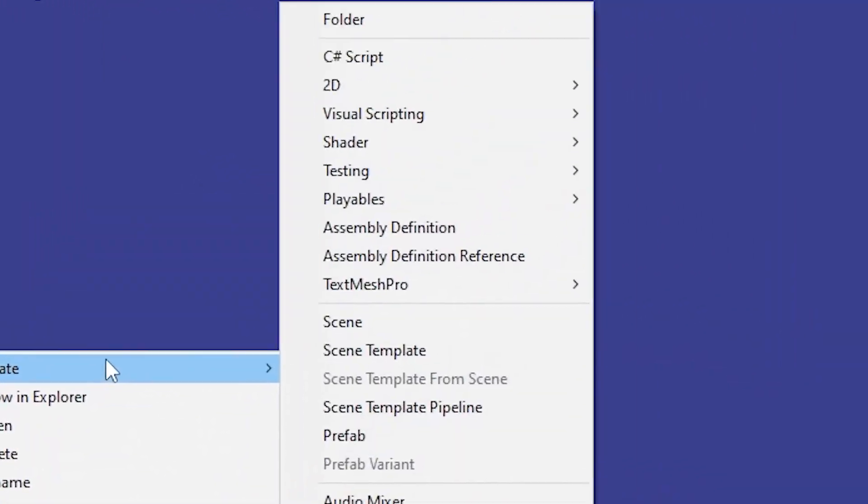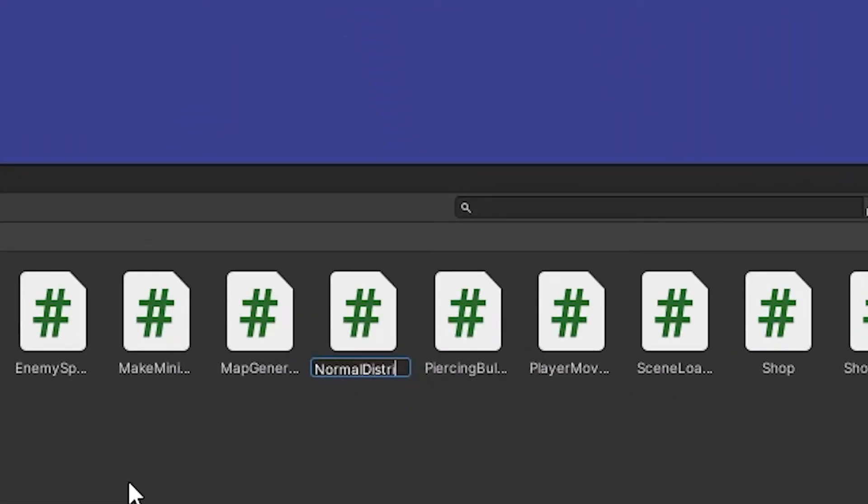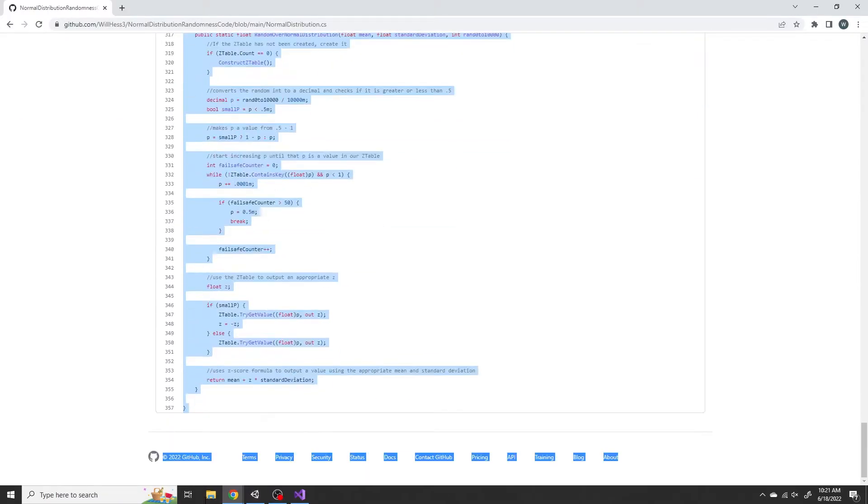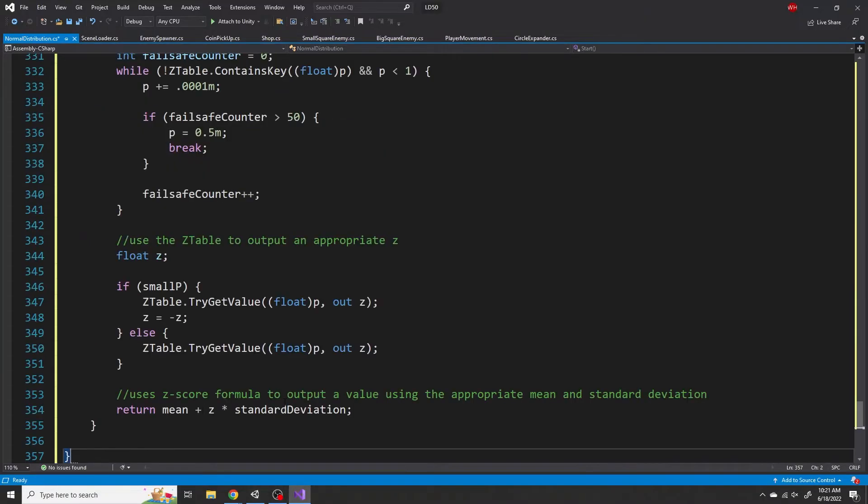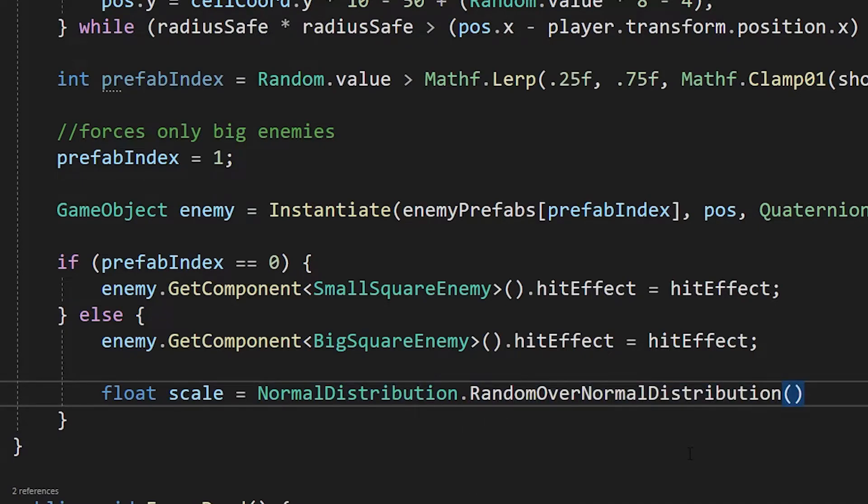The first step is to make a new script called Normal Distribution. Next, you want to use the link in the description to copy and paste in the code. From there, I go in right after the enemy has been created, and I make a variable called scale, and I set it equal to normal distribution dot random over normal distribution.